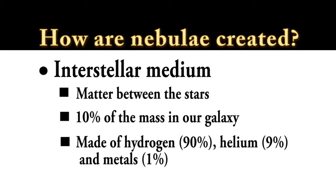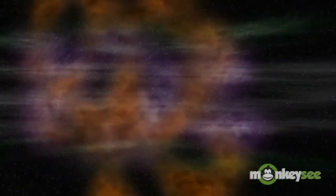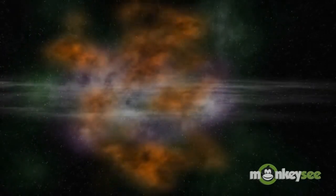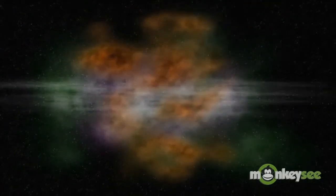The other way a nebula can form is from the interstellar medium. The interstellar medium is how we call all the matter between the stars. It contains at least 10% of the observed mass in our galaxy. Its composition includes gas containing hydrogen atoms and molecules, helium and other small quantities of metals. Usually, interstellar material is separated by great distances but can collapse together due to gravitational forces, and when this happens, a nebula forms.